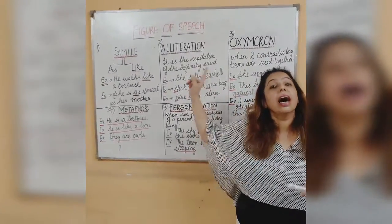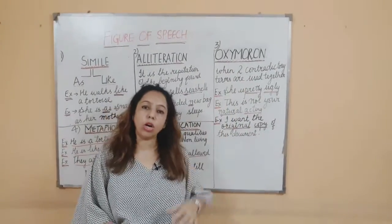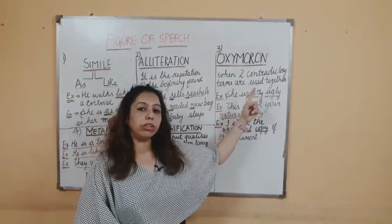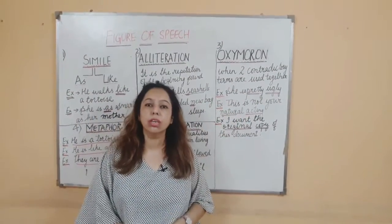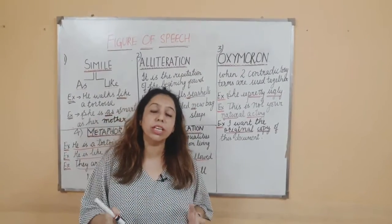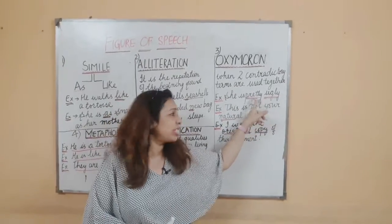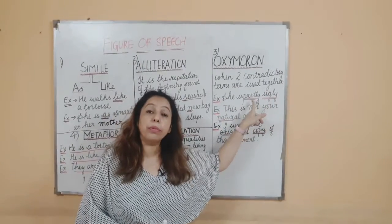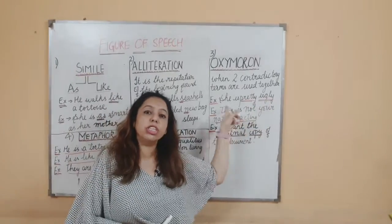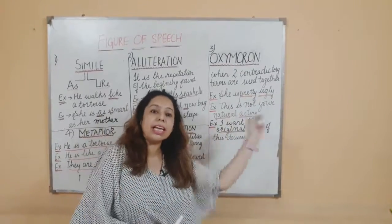Our next figure of speech is oxymoron. In oxymoron, you should remember one thing: when two contradictory terms are used in one sentence, we call it oxymoron. These are opposite terms. For example: 'She is pretty ugly.' Pretty means beautiful, but at the same time ugly — so two contradictory words are used in one line. That is oxymoron.